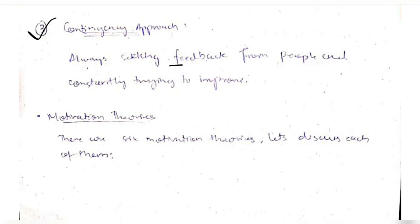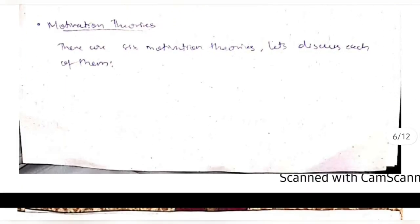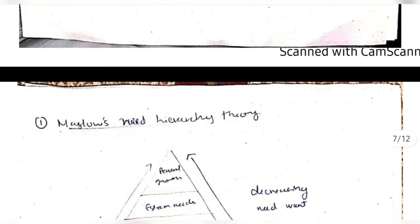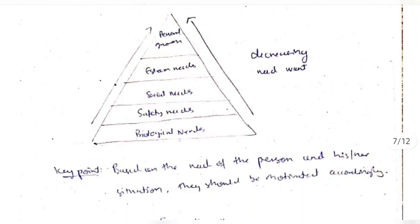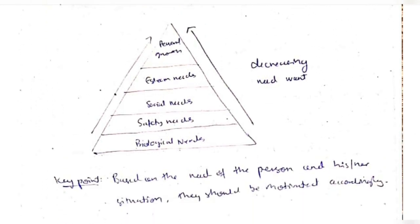Motivation theories talk about how to improve people's productivity at work using motivation. There are six in total. The first is Maslow's Need Hierarchy Theory, which presents a pyramid of needs in decreasing order of urgency. The first level is biological needs — very important ones like hunger and thirst.